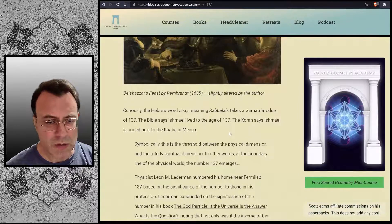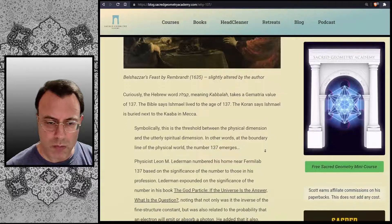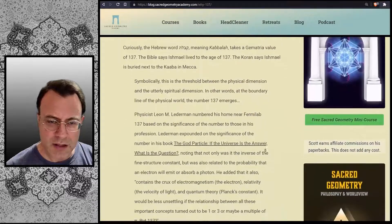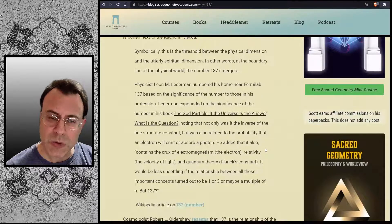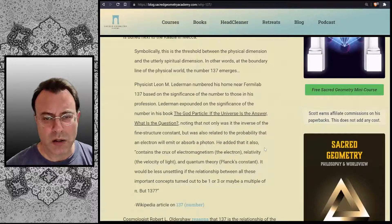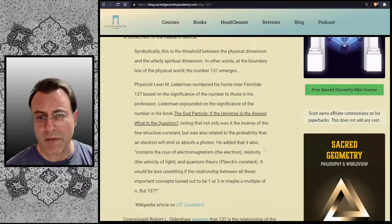The Bible says Ishmael lived to the age of 137. The Koran says Ishmael is buried next to the Kaaba in Mecca. Symbolically, this is the threshold between the physical dimension and the utterly spiritual dimension. In other words, at the boundary line of the physical world, the number 137 emerges.